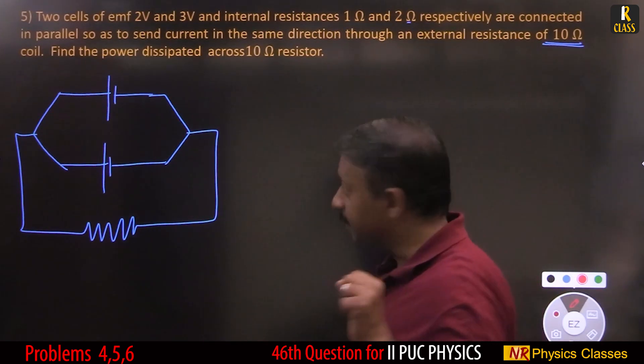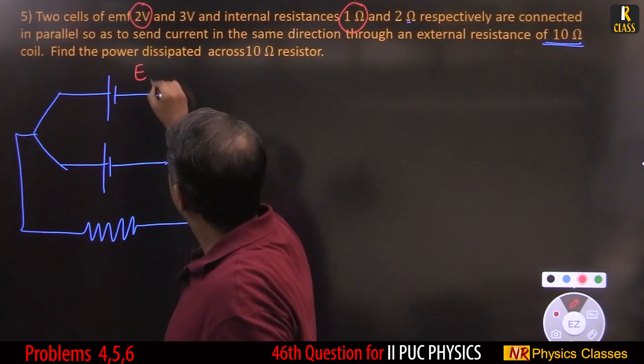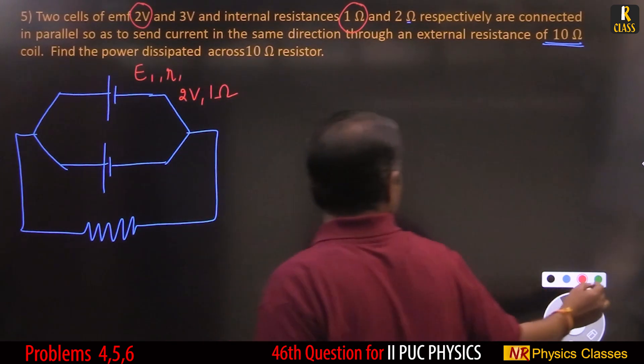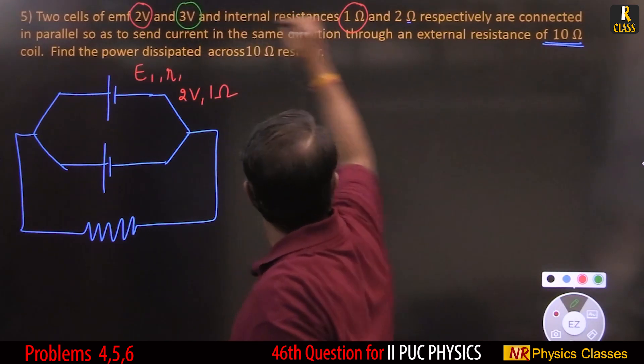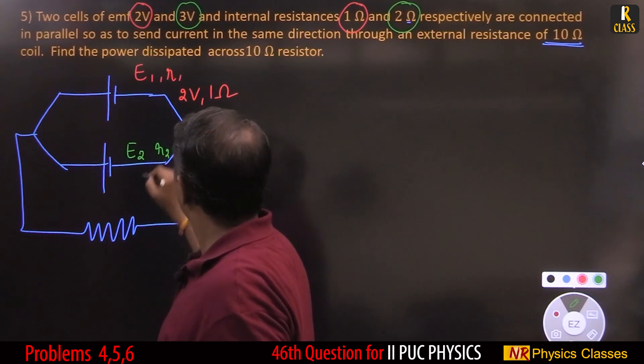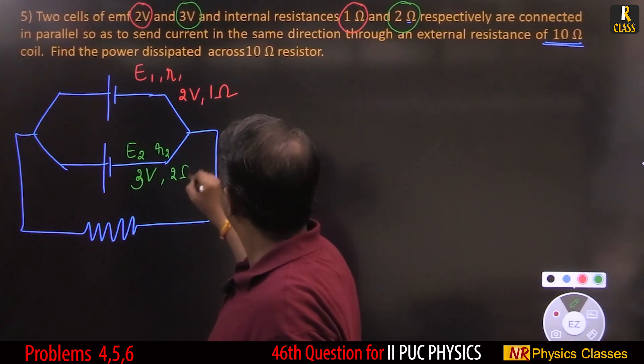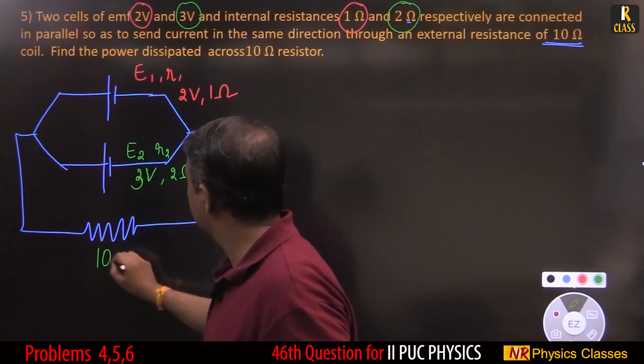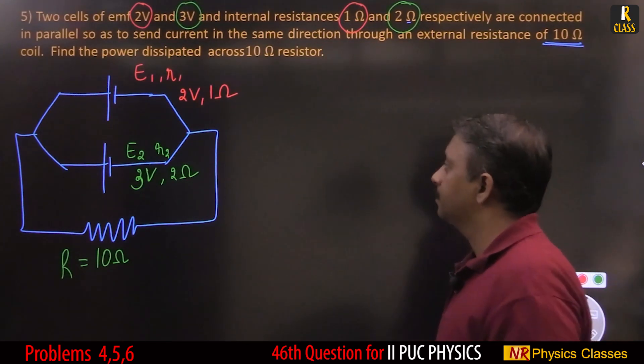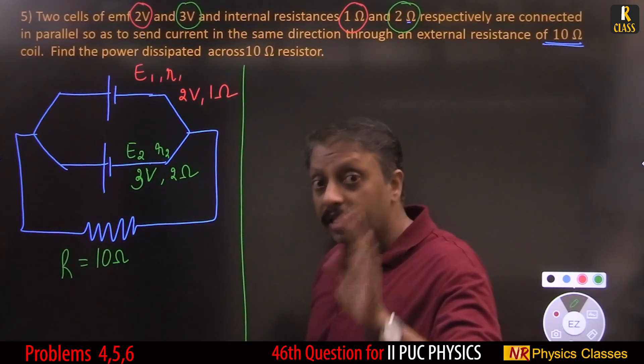This is the circuit. First cell, second cell, they are connected such that they send current in the same direction. Carefully collect the data: 2 volt, 1 ohm - this is E1, R1. Next is 3 volt, 2 ohm - E2, R2. External is 10 ohm. Now since cells are in parallel, let us find R equivalent first.